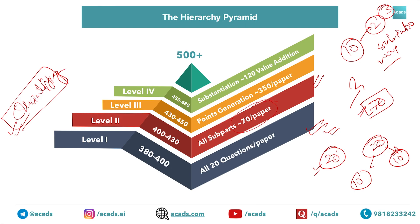If you can attempt all 70 subparts you will get considerable marks. On average, similar to the paper completion rate, around 10 to 12 subparts are missed per paper. So number two priority is identifying all 70 subparts — identification is the critical step — and then attempting each one, because missing subparts is a sure shot way of losing marks.